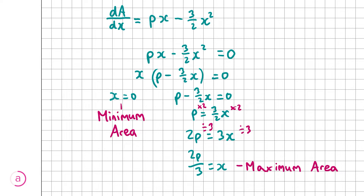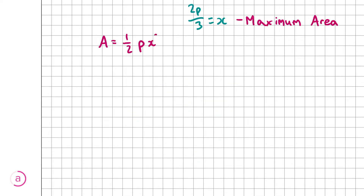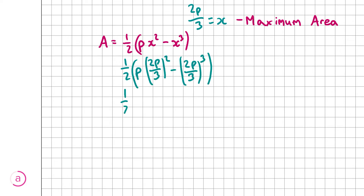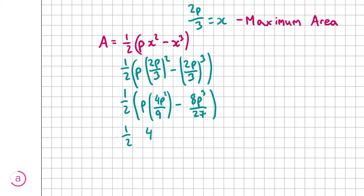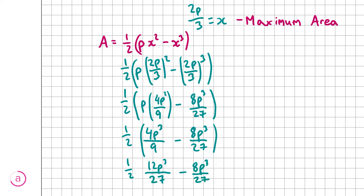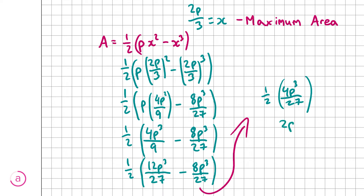We're not done here — this is the x coordinate, and we need to find the corresponding area value. Putting x = 2p/3 back into the area formula, half times p times (2p/3)² minus (2p/3)³, we get a half times (4p³/9 minus 8p³/27). Writing both terms with denominator 27 gives half times (12p³/27 minus 8p³/27), which equals half times 4p³/27, giving a maximum area of 2p³/27 square units.